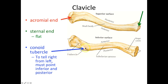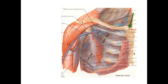This clavicle has to be pointed inferiorly and posteriorly — I'll show you this in lab. The other thing we need to do to tell right from left is making sure that the acromial end is facing laterally and the sternal end is facing medially. There's the sternal end meeting up to the sternum, and the acromial end, named so because it meets the acromion — which sits right behind this arrowhead — the acromion of the scapula.